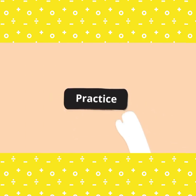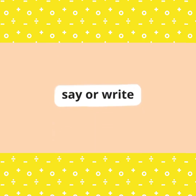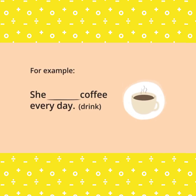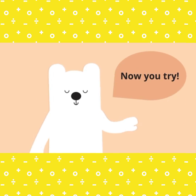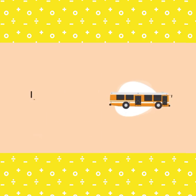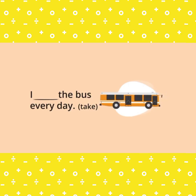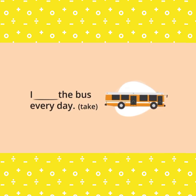Now we come to the practice part. Let's practice. First example: She ___ coffee every day. The bracket gives 'drink.' The answer is 'drinks.' She drinks coffee every day. Second example: I ___ the bus every day. The bracket gives 'take.' The answer is 'take.' I take the bus every day.